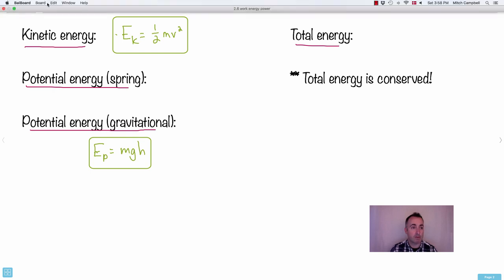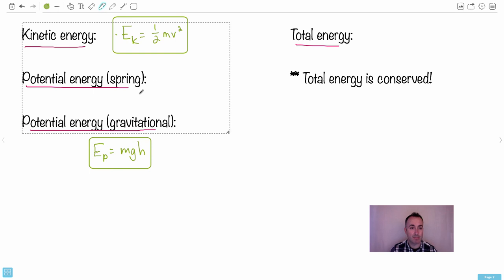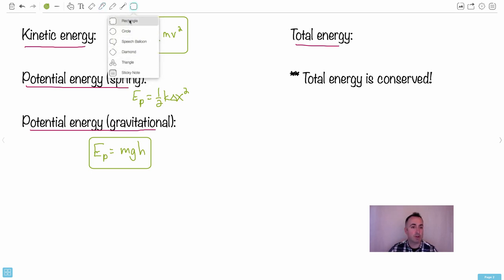Then you have an equation for the potential energy of a spring. So you might need that at some point. So we'll put Ep and it's half K delta X squared, I think. Let me just make sure that's the case. I don't want to get it wrong. Yeah, that's it. So this is the case. So this one here is what you need for a spring. Remember what K is. K is a spring constant. And X is just a displacement from equilibrium.